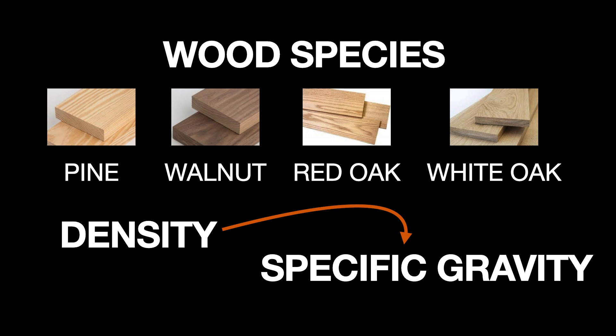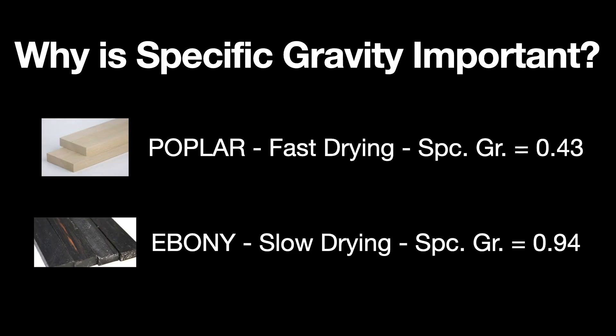The denser the wood is, the larger the specific gravity number will be. In general, a wood species with a high specific gravity will dry slower.